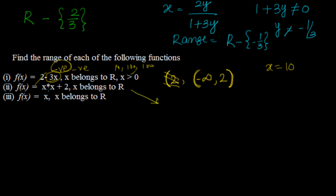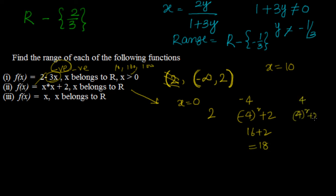Next: f(x) = x² + 2, x belongs to R. If x = 0, the value is 2. If x = -4, I get 16 + 2 = 18. If x = 4, I also get 18. Since squaring always returns a positive value, x² + 2 is always at least 2. So the range starts from 2 and goes towards infinity, with 2 included and infinity excluded.